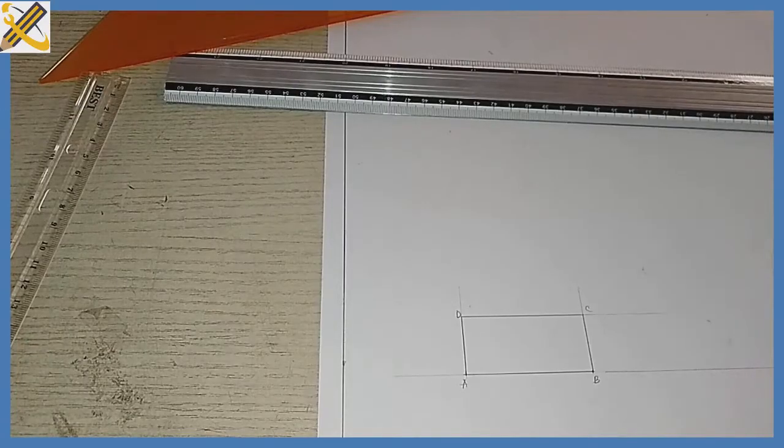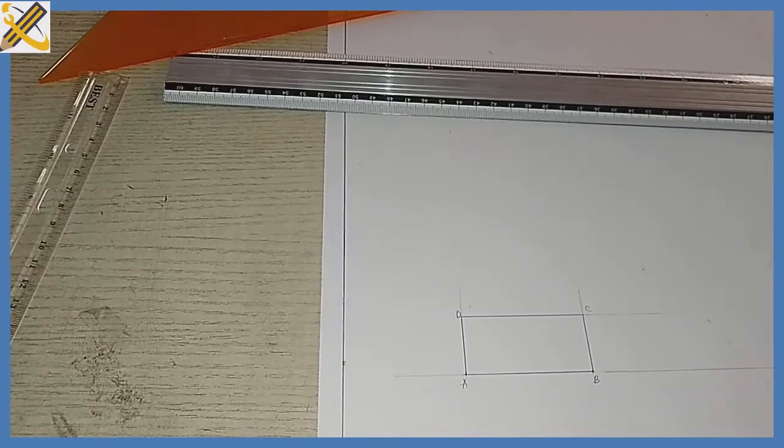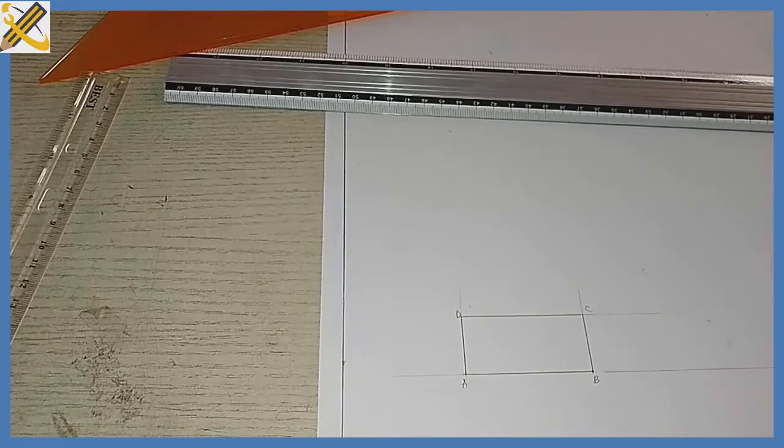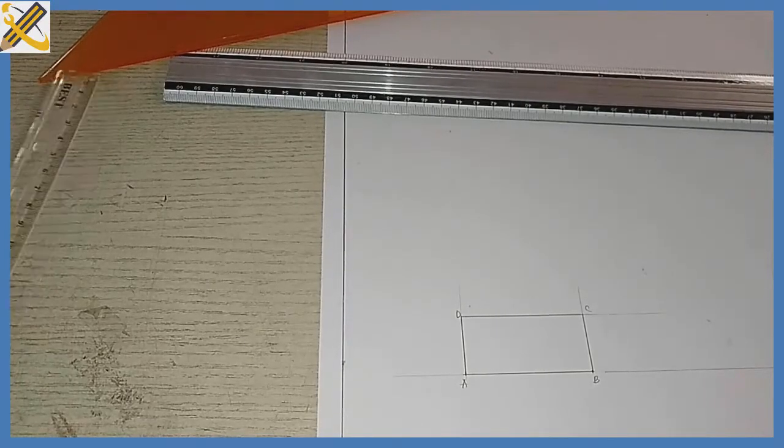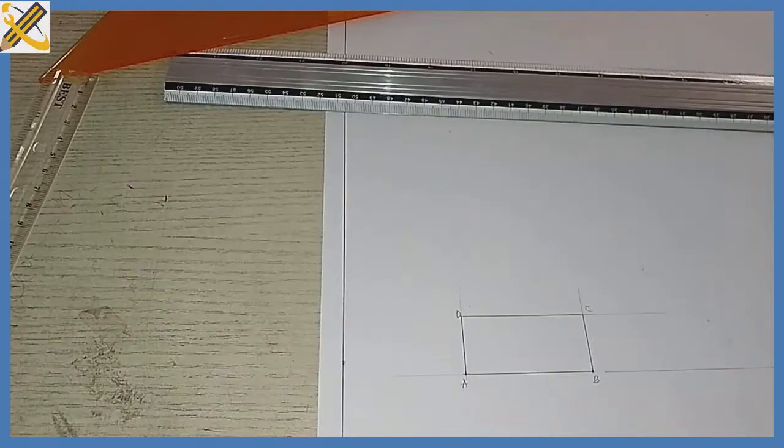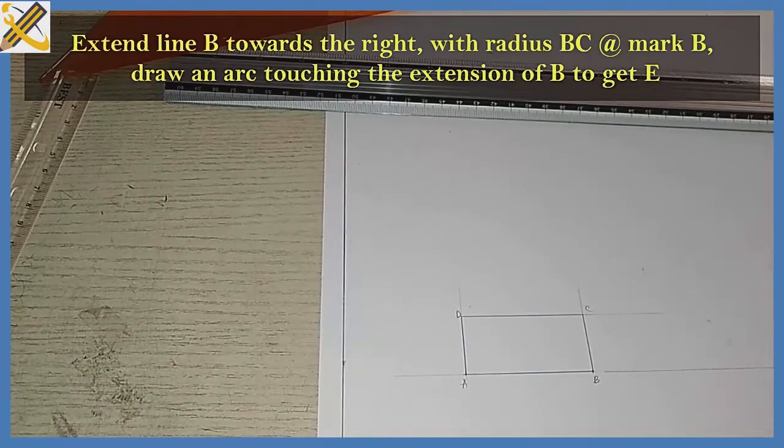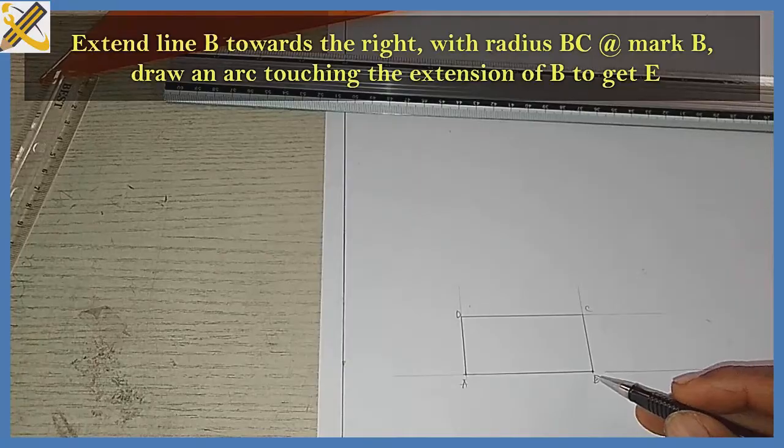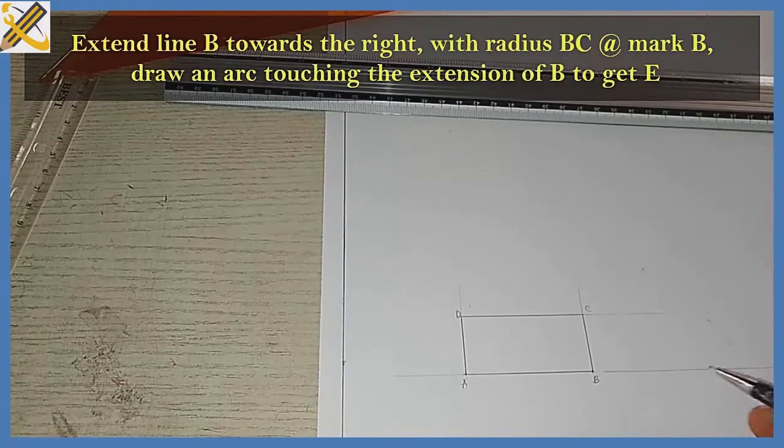Construct a square equal in area to a given rectangle. The first thing you need to do is to produce the given rectangle, which is what I have on the sheet here, rectangle ABCD. After doing that, from point B you extend this line further, which I have already done.